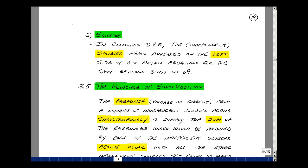In our last videos, we did some examples of writing circuit equations where we had independent sources, and they showed up on the left-hand side of our matrix equation. We'd seen that before and had given some reasons for that on page 9. I'm going to use that idea to prove a very powerful theorem in circuits that's called superposition.